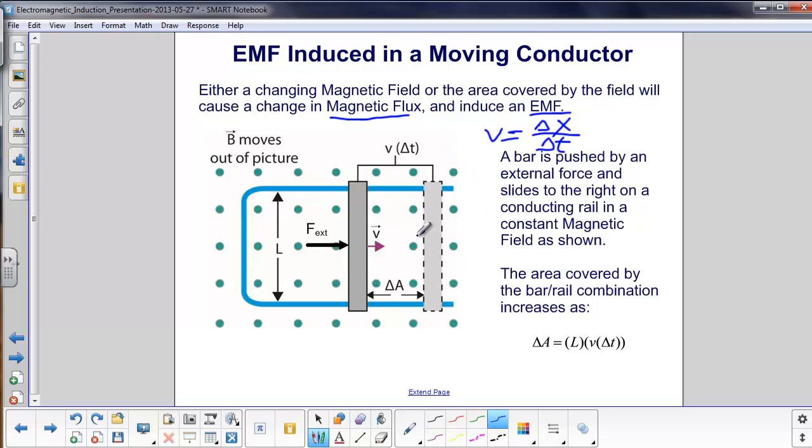And then this increase in area, this whole section here, you can see where the slide started here, and then the bar moved over to here. This whole area would be V delta T, which is how much it's increased in the X direction, times L, which is the Y component. So the change in area of this bar-rail combination, due to someone or something pushing it, would be L times V delta T.